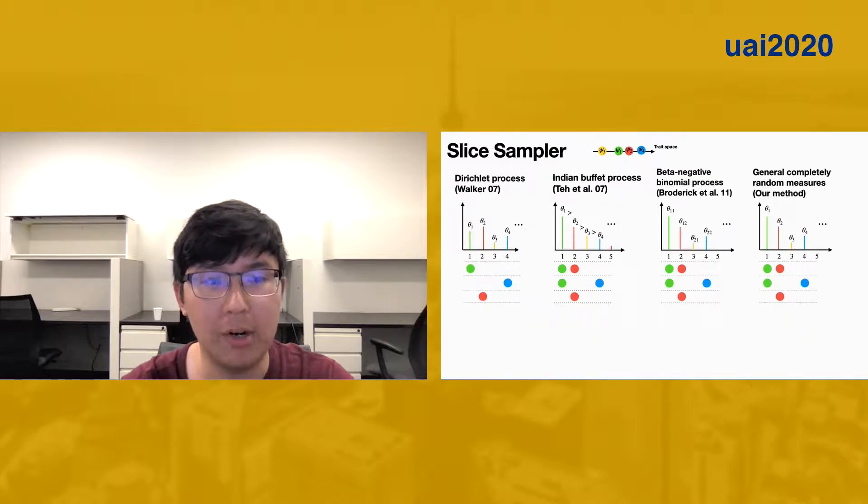Slice sampler has been previously applied to nonparametric models on a case-by-case basis. Previous work on slice sampler for Dirichlet process augments the model by independently sampling uniform auxiliary variables conditional on the frequencies, but this relies on the property of the Dirichlet process as the frequencies sum to one.